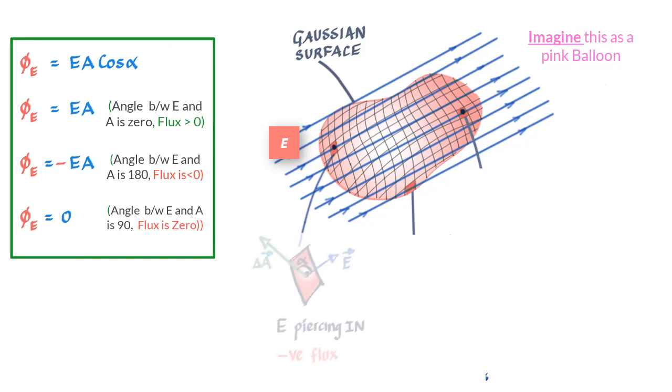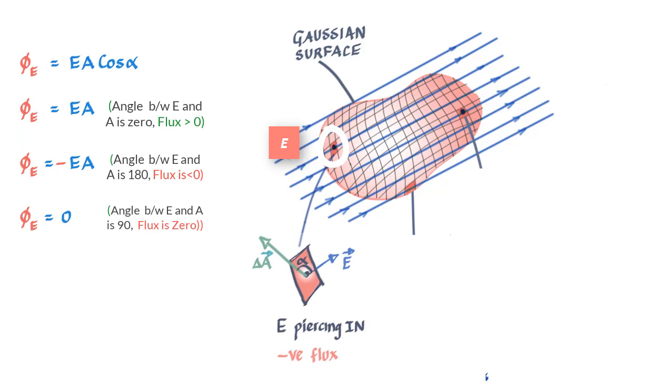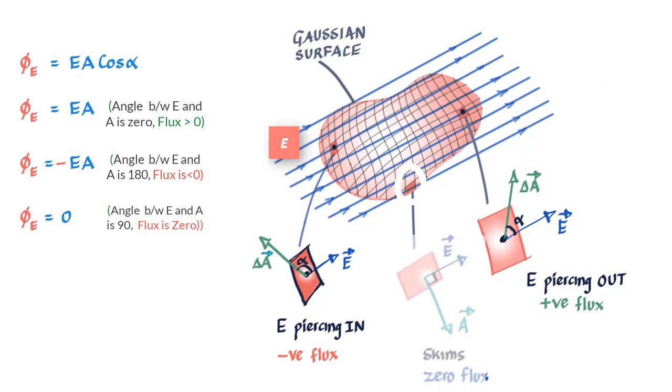You can see this surface where the field is piercing it, the flux would be negative. But here where the field is coming out of the surface, the flux would be positive. And out here where the field is skimming the surface and the angle between the vector A and the field is 90 degrees, the flux is zero.